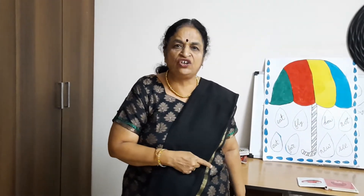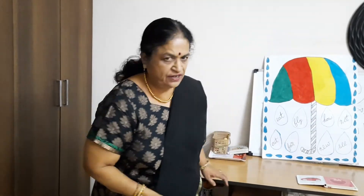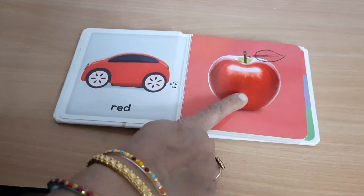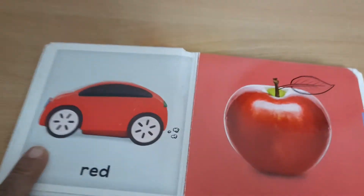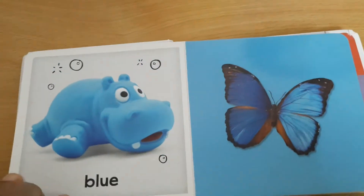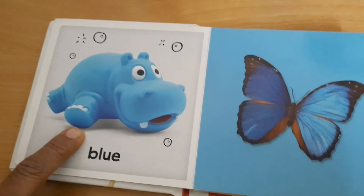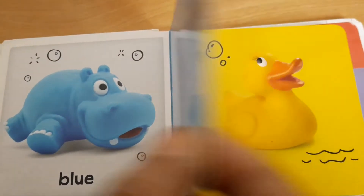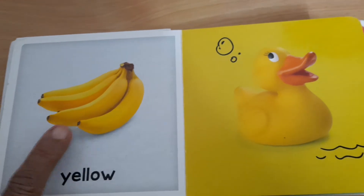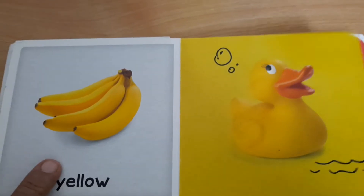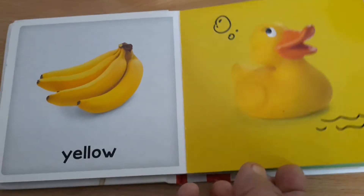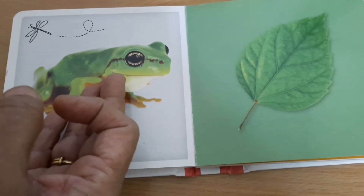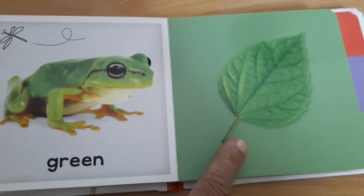Now let us see the colors with pictures. Red — red apple, red car. Then we have blue — blue hippo and blue butterfly. Then yellow — yellow banana, yellow duck. And then we have green frog — my god, such big eyes the frog has! And green leaf.